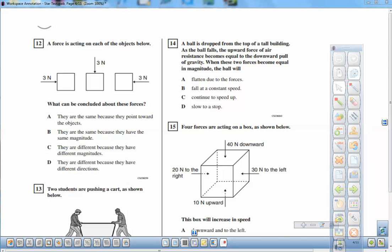Number 12 on the California Standards Test released questions. A force is acting on each of the objects below. So here on the left-hand box you see a force acting to the right of magnitude 3 Newtons, and here downwards and here to the left.